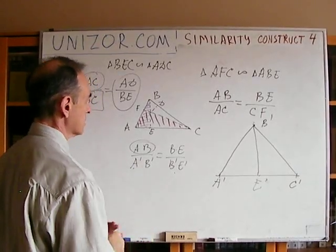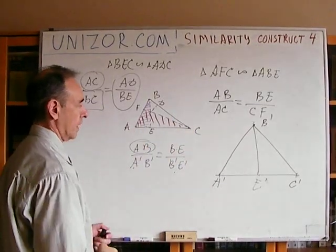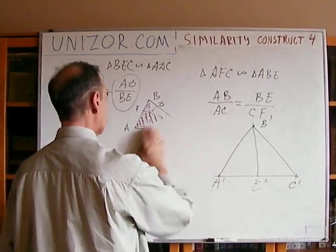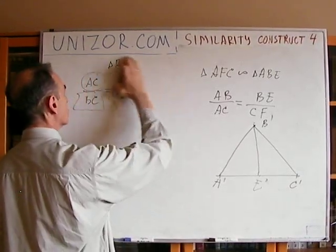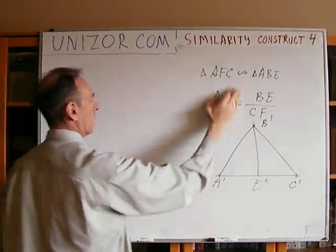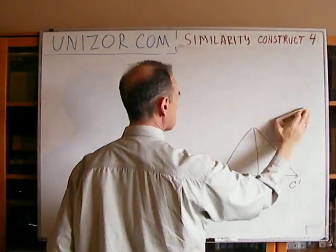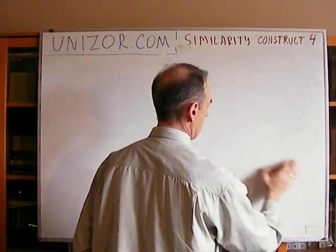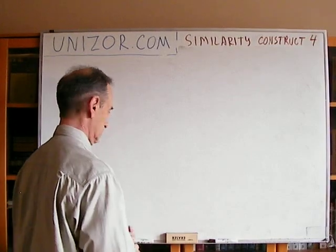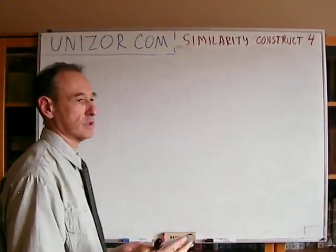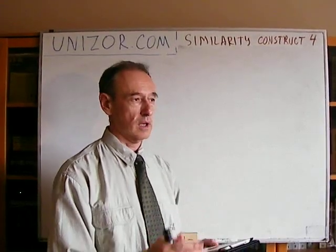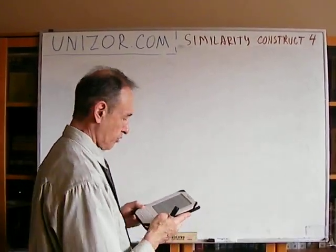I know AB, and then I find all other sides very easily. What's interesting here is to notice that sides in a triangle are inversely proportional to their altitudes, use it to construct the similar triangle, and then scale it to the proper size.